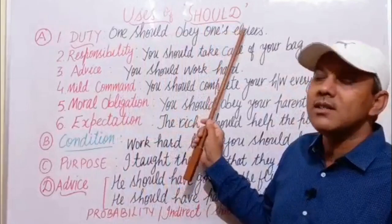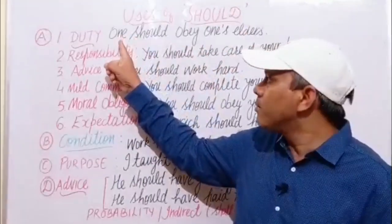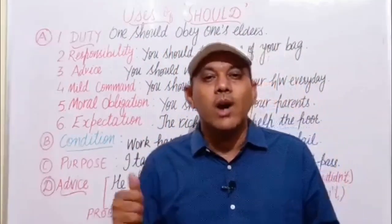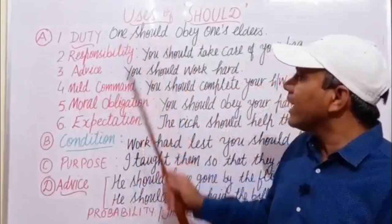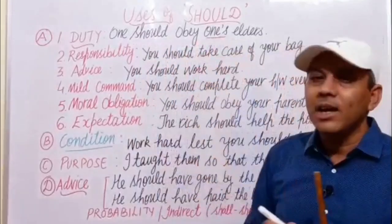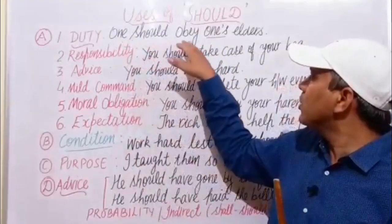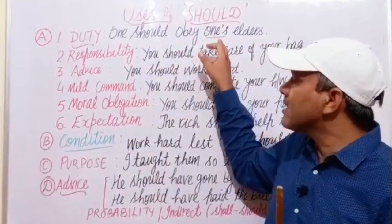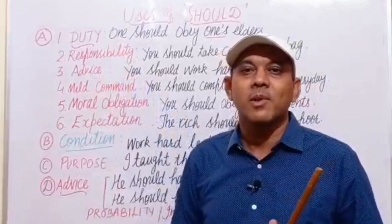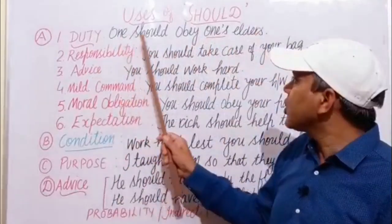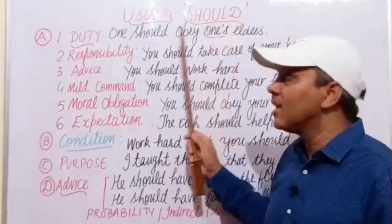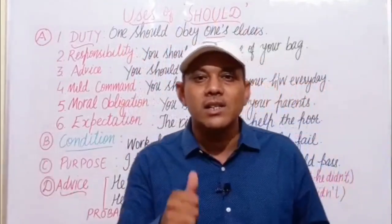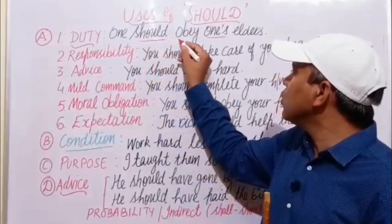Here, should is used to express duty. For example: one should obey one's elders. This is the duty of everyone — here 'one' means everyone. Notice the possessive pronoun always agrees with the subject: one should obey one's elders, he should obey his elders, she should obey her elders, they should obey their elders.